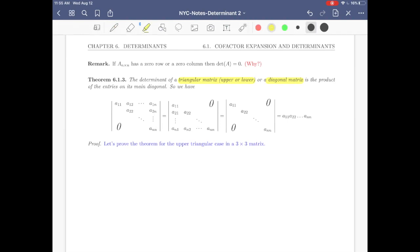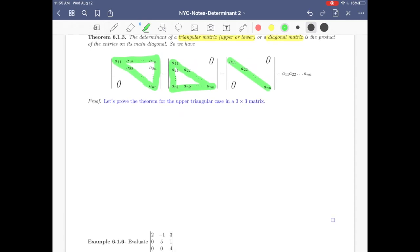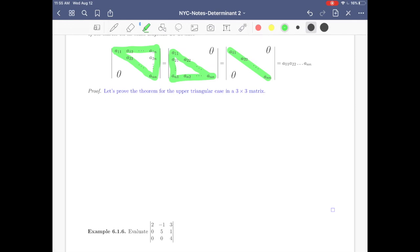So look at, for example, this upper triangular matrix right here. Or look at this lower triangular matrix, or look at this diagonal matrix. In all these three cases, the result is just multiply the entries in the main diagonal to evaluate the determinant.